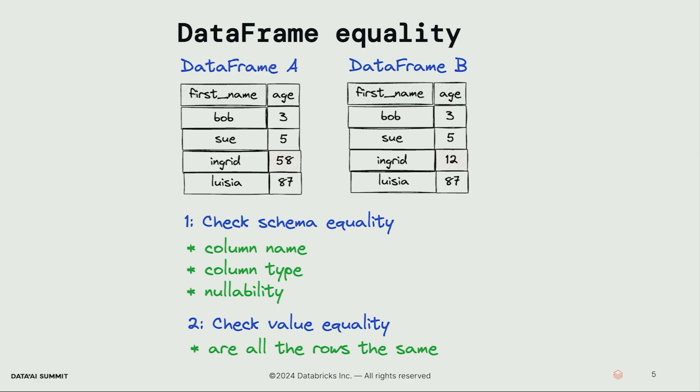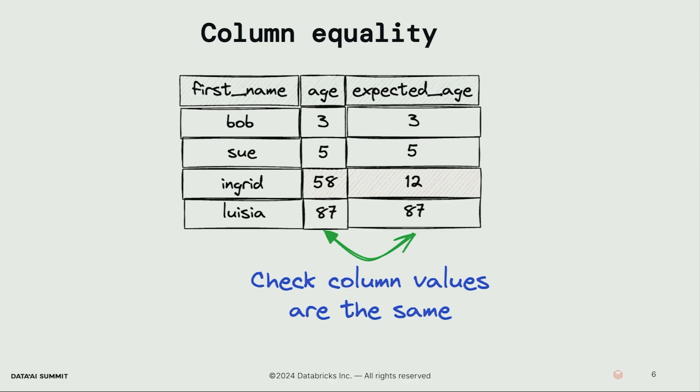After we check and confirm that the schemas are the same, we check that all the values in both DataFrames are the same. So if we're comparing DataFrame A and DataFrame B and they have the same schemas, but then we look and see in the third row the values are different, we'd say these DataFrames aren't the same. Column equality tests are a little different — we're looking at one DataFrame and comparing the values in two different columns. For example, comparing age and expected age and saying these aren't the same because the values in these two columns are not equal.